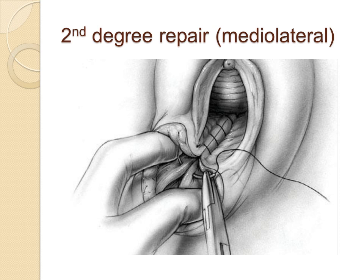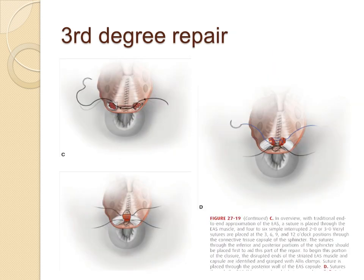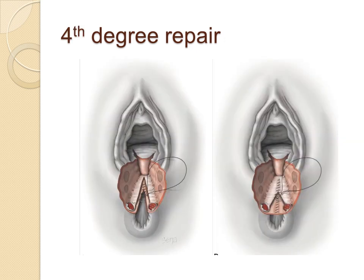In repairing a mediolateral second degree episiotomy, the same principles also apply as in the midline episiotomy. For the third degree repair, we do end-to-end anastomosis of the external sphincter. For a fourth degree vaginal tear, we do a layered repair starting from the rectal mucosa and up — first repairing the rectal mucosa, followed by the fascia, then the external anal sphincter, internal anal sphincter, and then the vaginal mucosa.